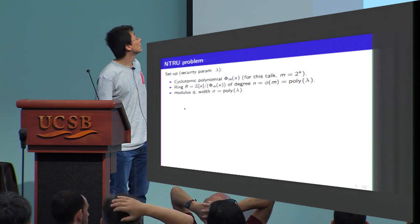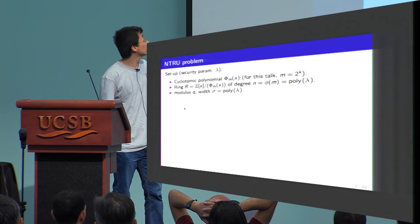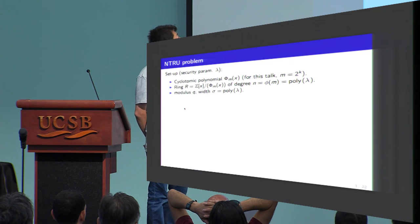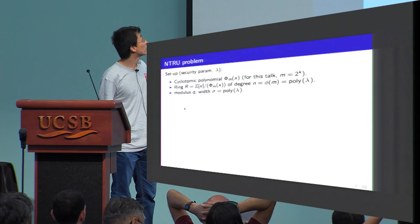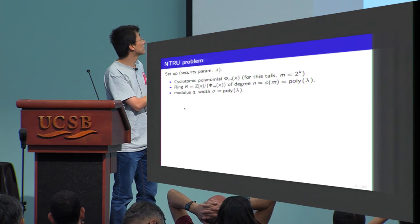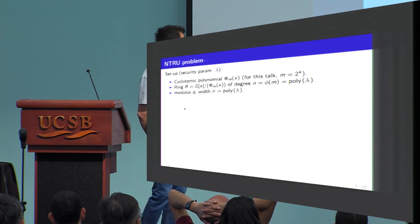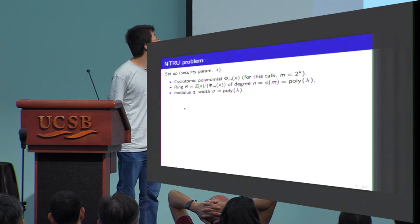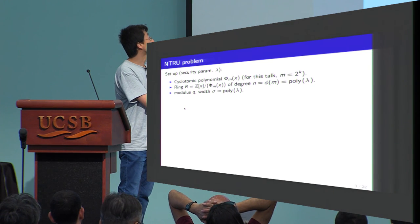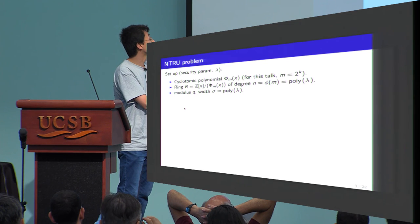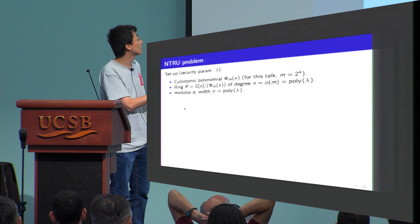The problem we are facing is the NTRU problem, where the general setup is that we are given the security parameter lambda and we are working in cyclotomic number fields defined by the cyclotomic polynomial of order M. The ring of integers has degree N which is phi(M). In this talk we focus on power-of-two cyclotomic number fields. There is also a modulus Q for the arithmetic ring, and another parameter called the width parameter sigma, which controls the size of the secret. Both the degree N and the width parameter sigma are usually polynomial in lambda.